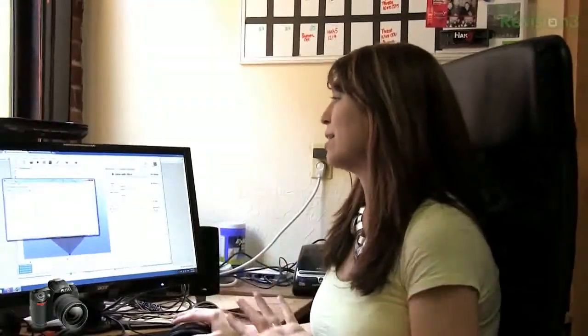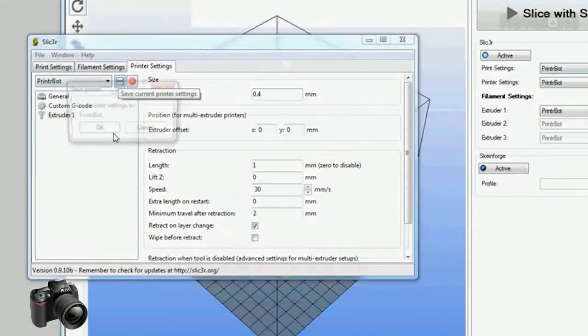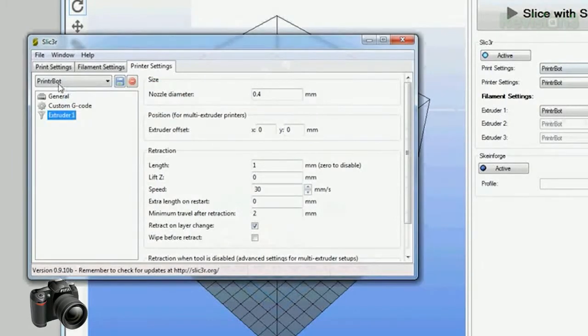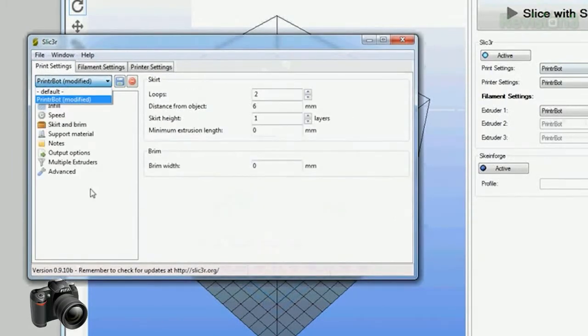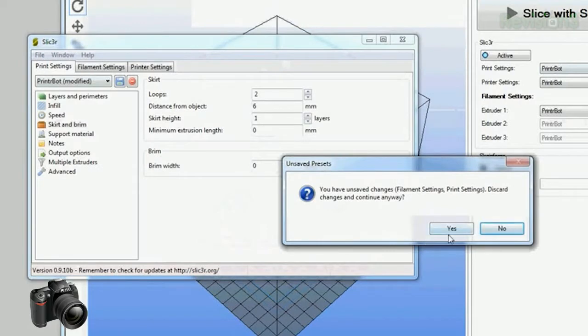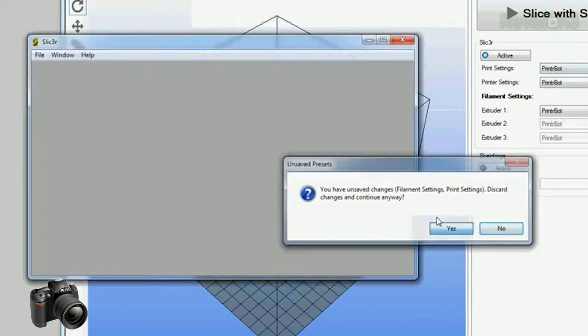Now, once you're done with all these, I really suggest that you save all your settings so you don't have to mess around with them again. So up here, I just click the Save button, and I saved them all as PrinterBot. So anytime I open this up, Slicer, it's going to automatically go to the PrinterBot settings, the file that I have saved. Now I can close this, discard any changes, continue anyway.